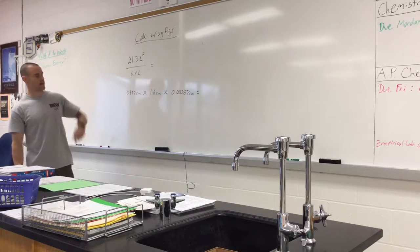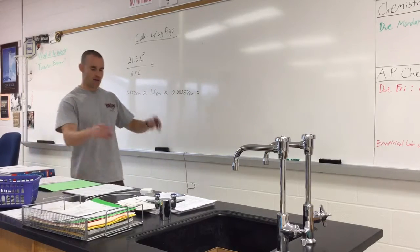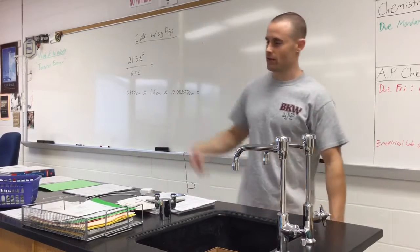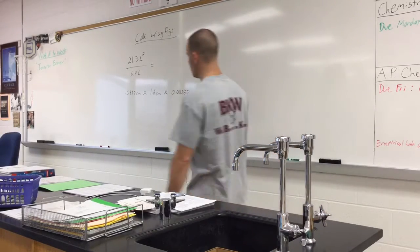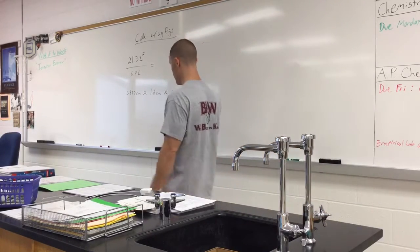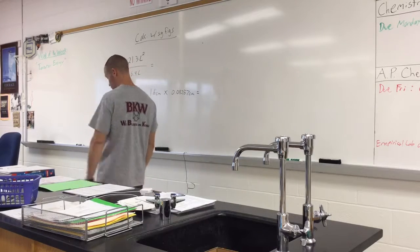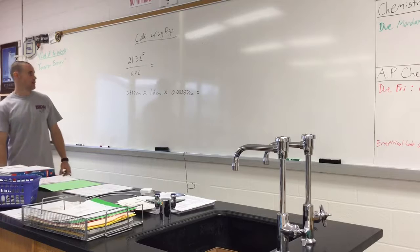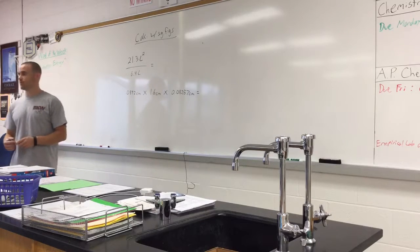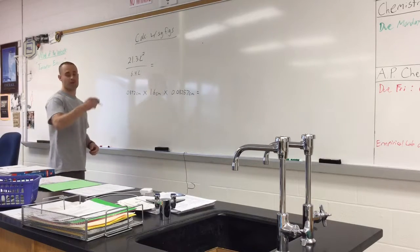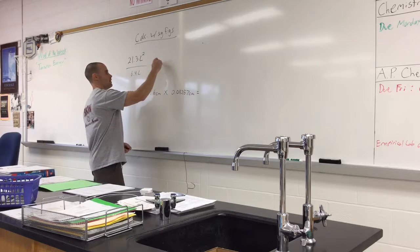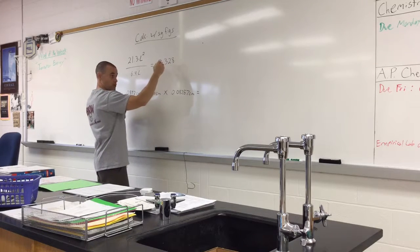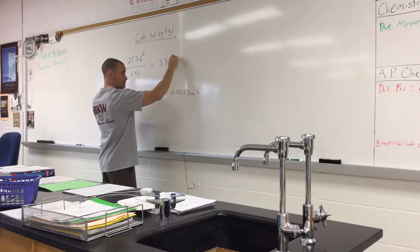Use your calculator — I want you to write down the entire number. I don't care how many decimal places there are; if it fills up the whole calculator, write them all down. 21.3 divided by 6.4 — Olivia, what did you get? 3.3125. And the unit? Liters squared? Well, the number is not squared; the unit is. It's liters squared divided by liters.